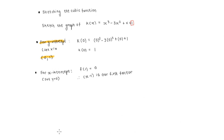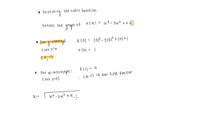Once you have your first factor, you then choose for yourself whether you're going to use polynomial long division, synthetic division, or inspection. In this case, I'm going to use polynomial long division. On the inside you write down your entire equation — so in our case this is k(x) plus 1 — and your first factor is written on the outside.